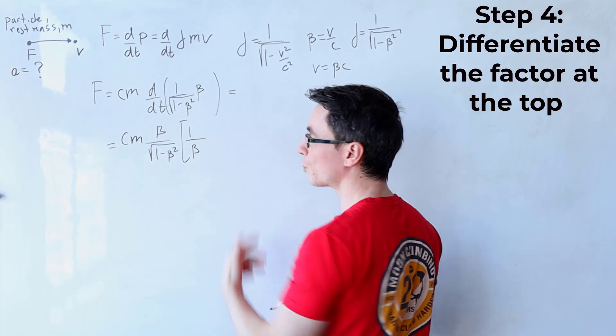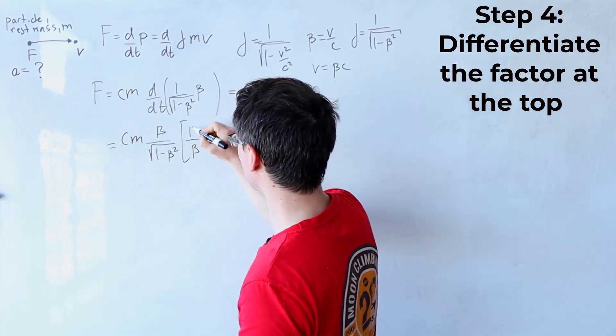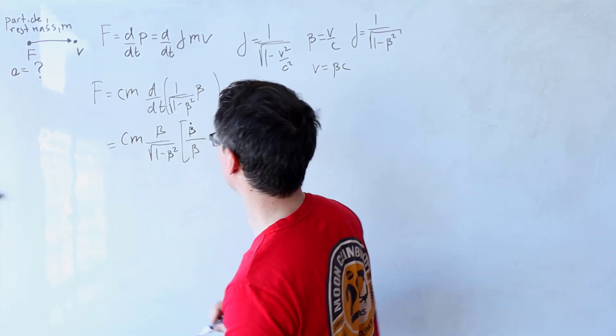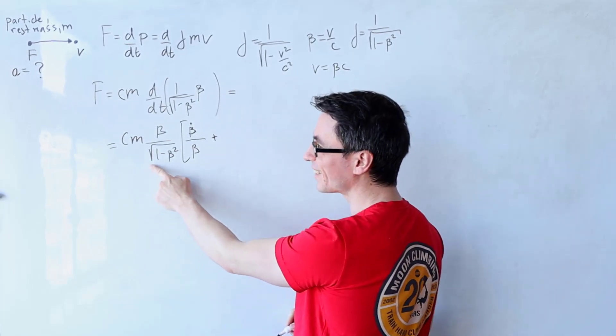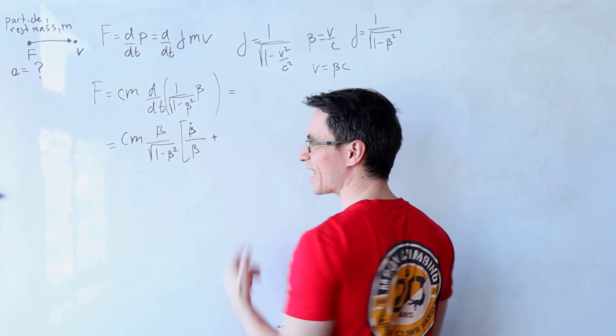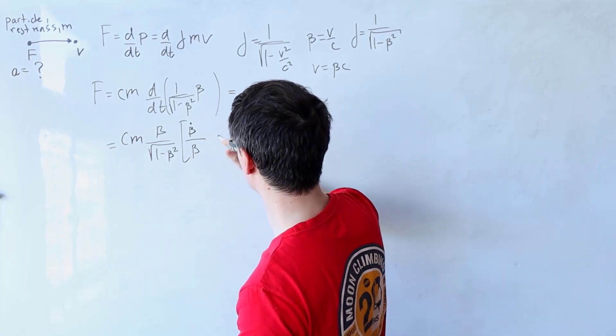At the top will just be the derivative of the factor. So rather than writing d beta by dt, I'm just going to write beta dot. And then plus the power of the second factor is minus a half. So the factor multiplying this will be minus a half. So this will be minus one over two.